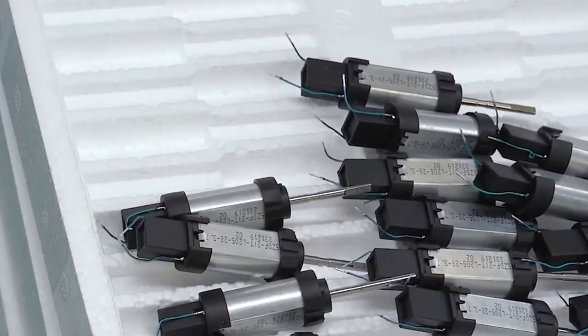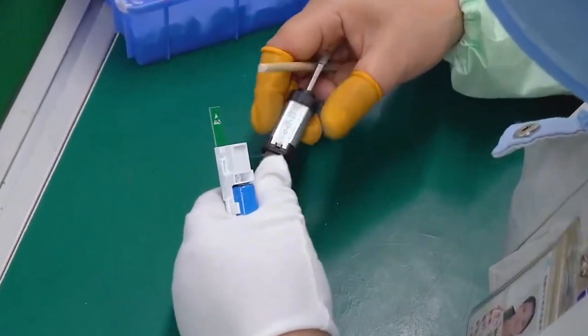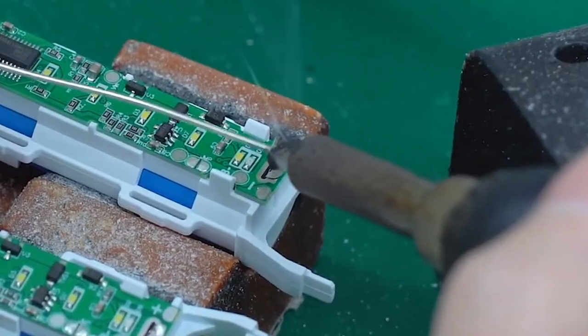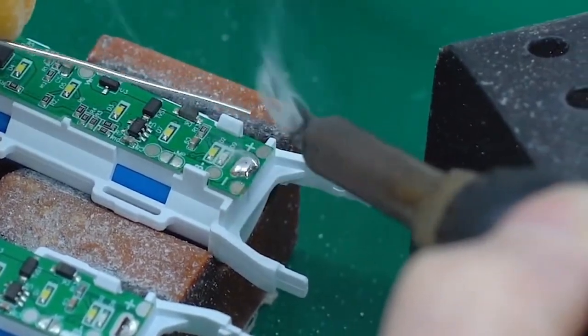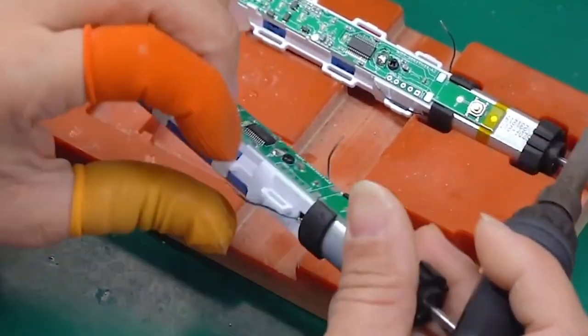It starts with the motor and PCB assembly, where robots combine copper coils, magnets, and printed circuit boards into precision vibration units. Each motor is tested instantly for speed and power, while controllers on PCBs are programmed for timing and charge settings.